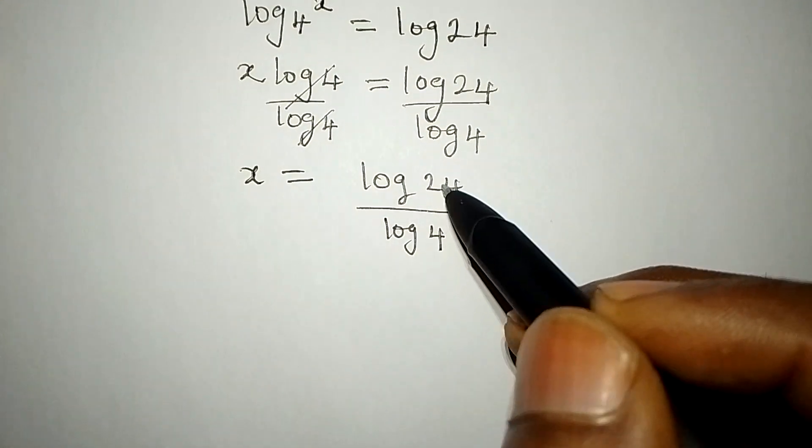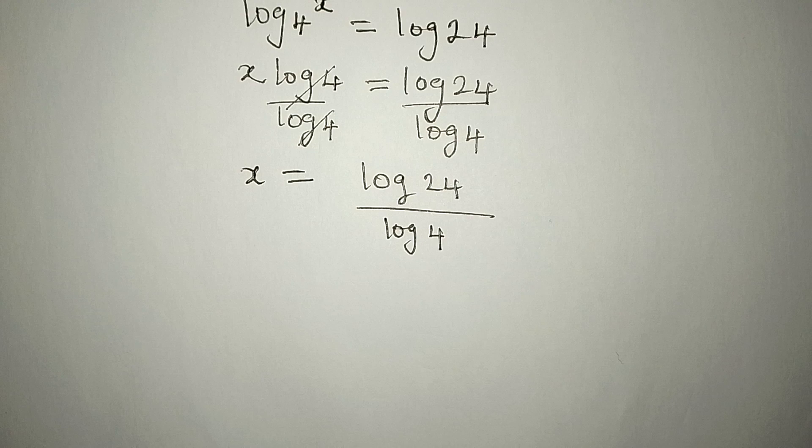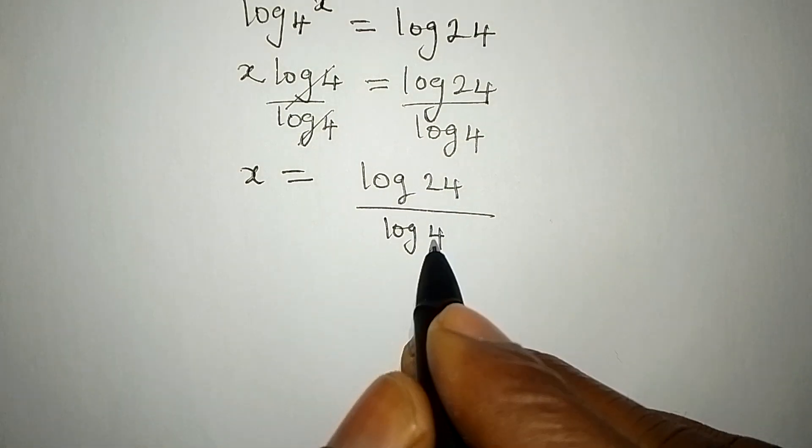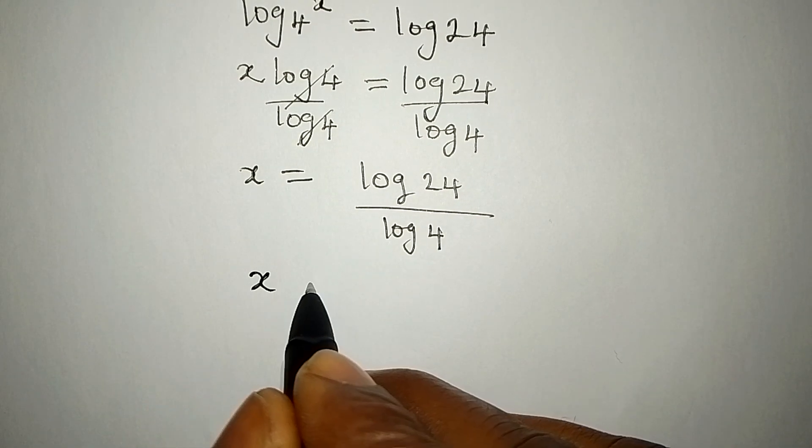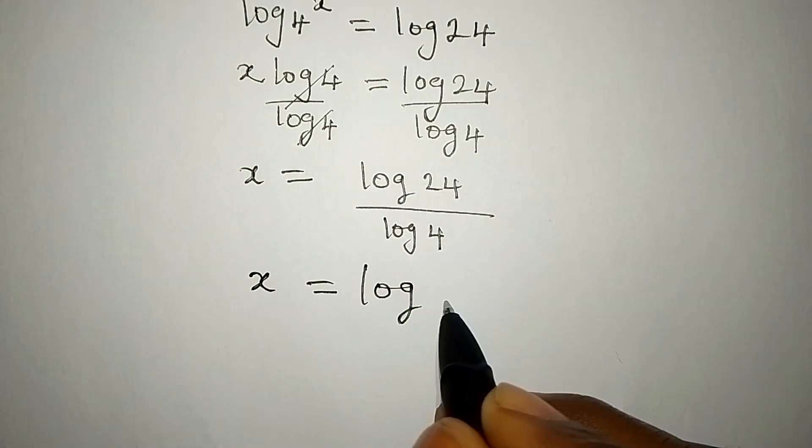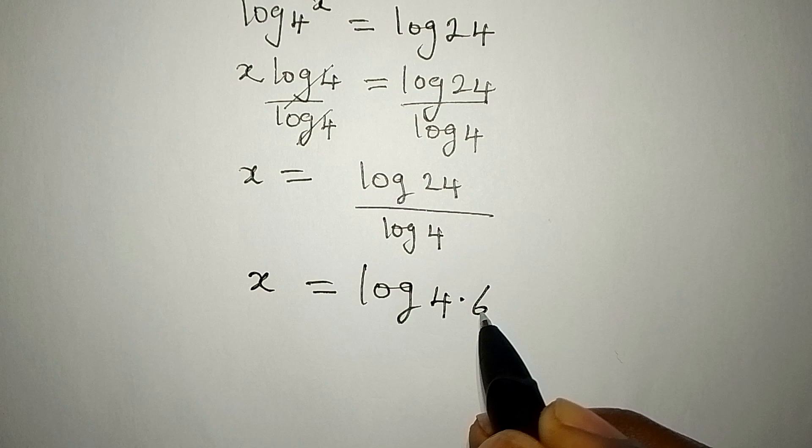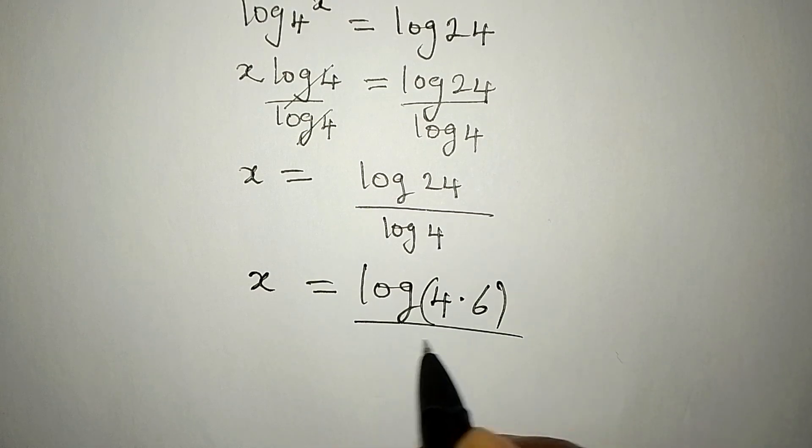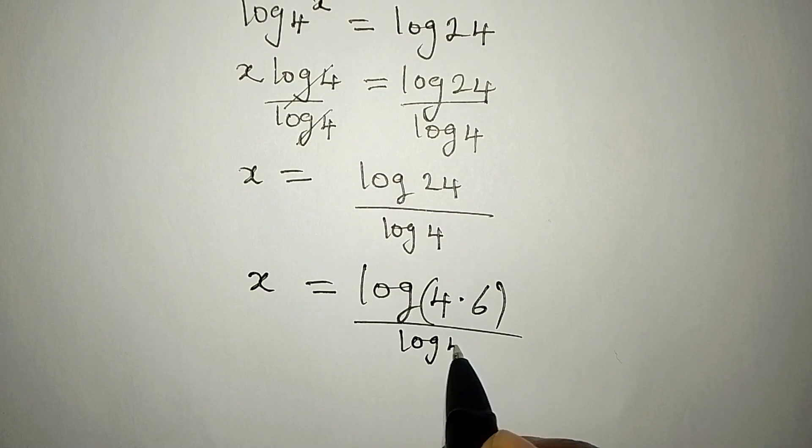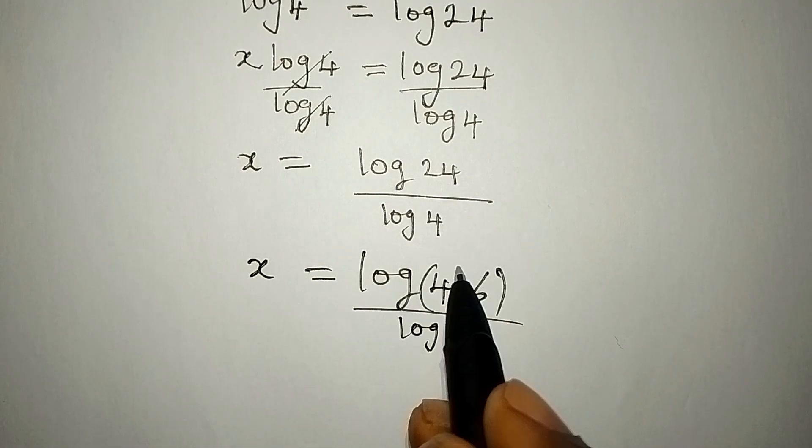But now, we can still reduce this to lower term without using calculator. Because from here, we're going to have x to be equal to log 24, here is 4 times 6. So, this will not be over log 4. Do not make any mistake by canceling what you have here.